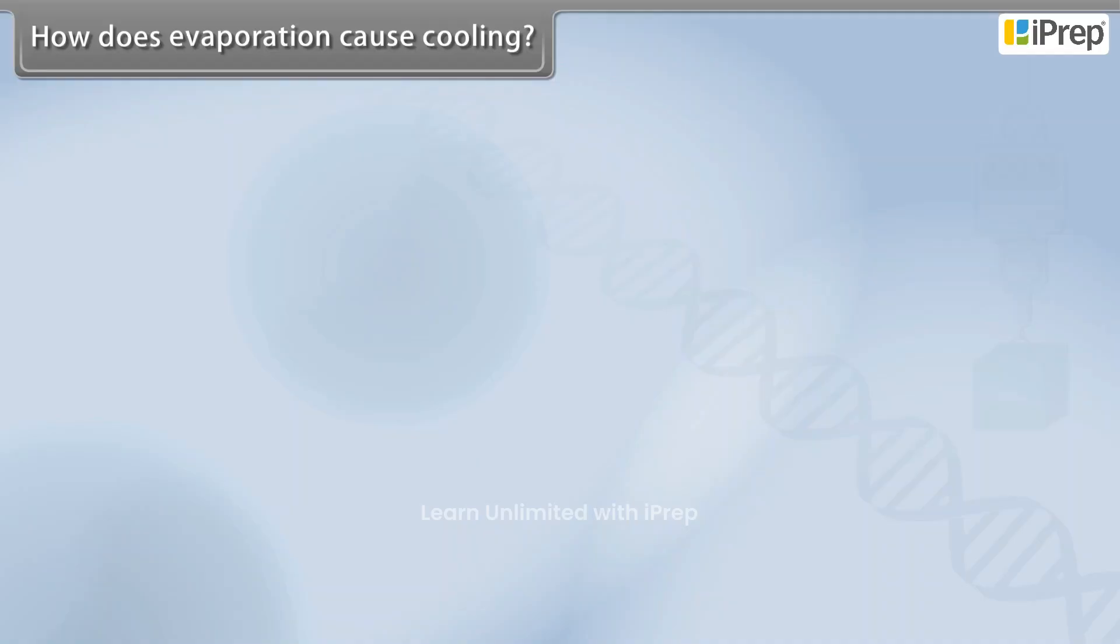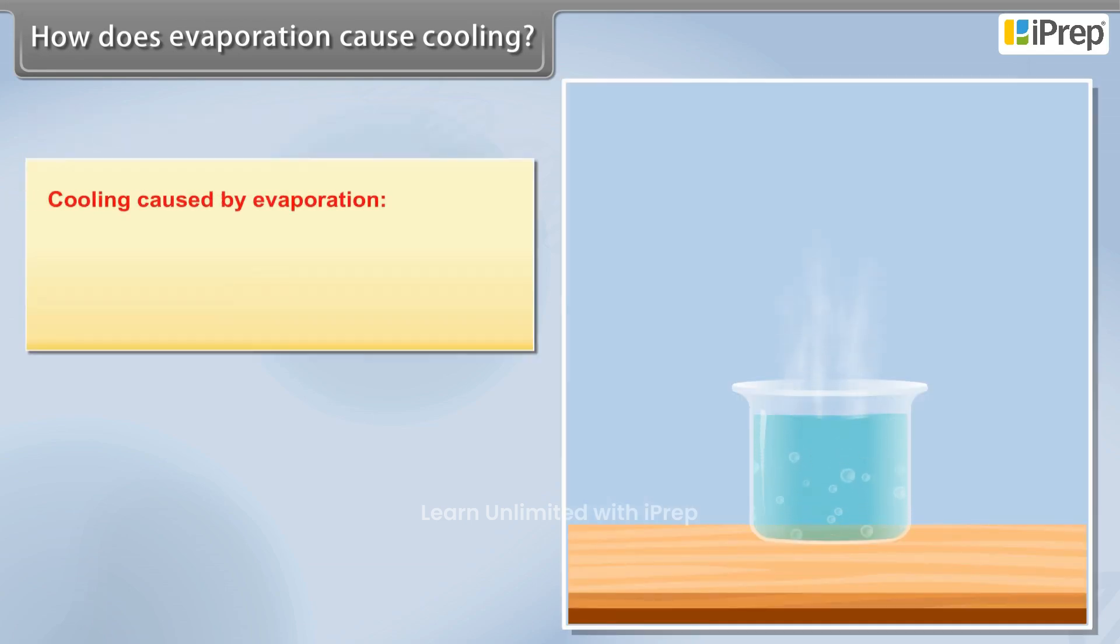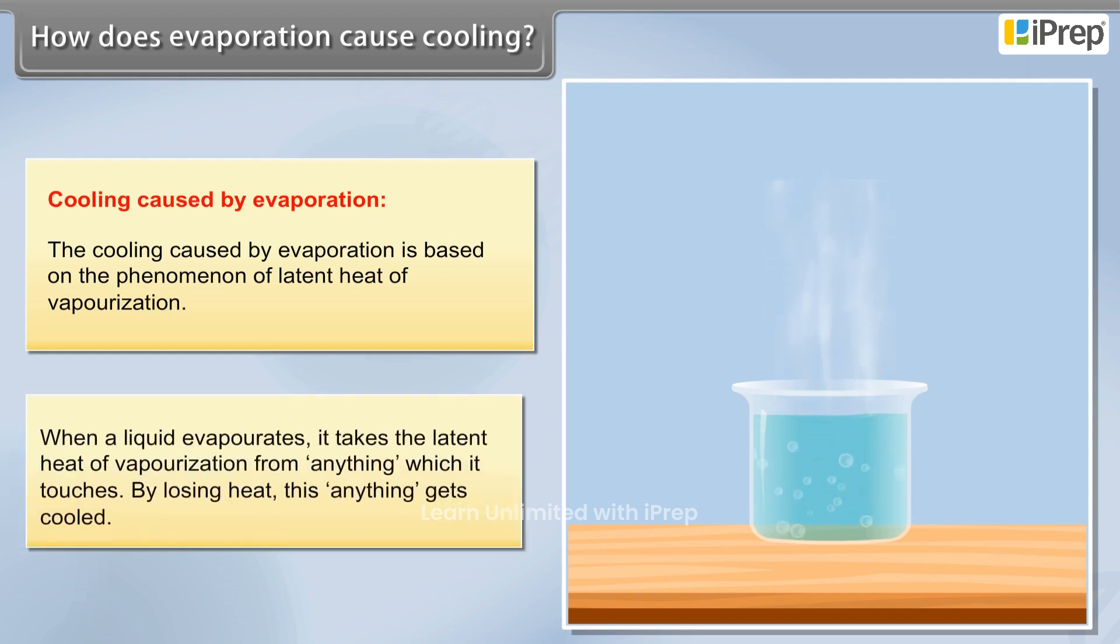How does evaporation cause cooling? Cooling caused by evaporation is based on the phenomenon of latent heat of vaporization. When a liquid evaporates, it takes the latent heat of vaporization from anything which it touches.